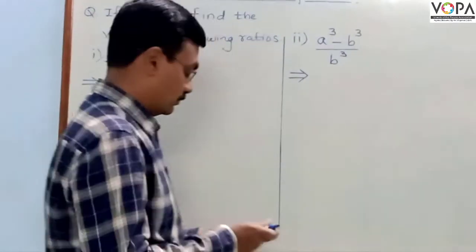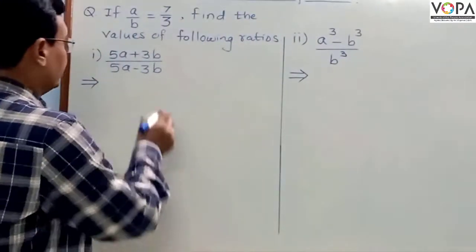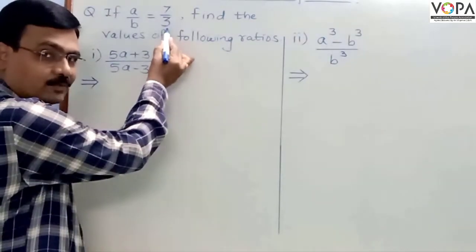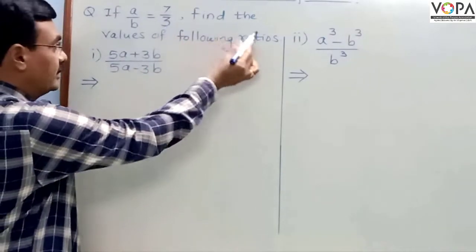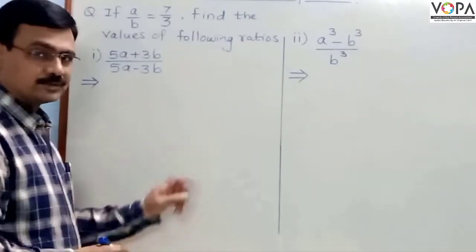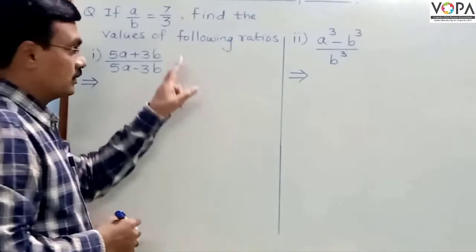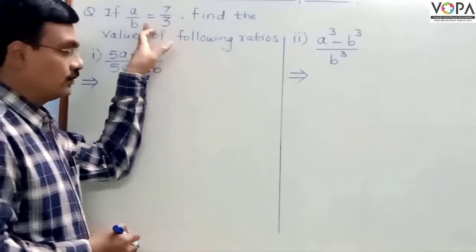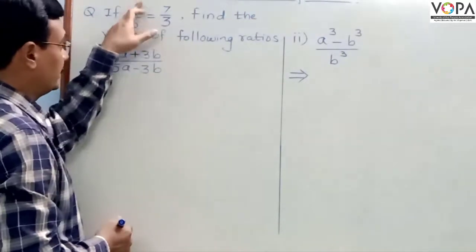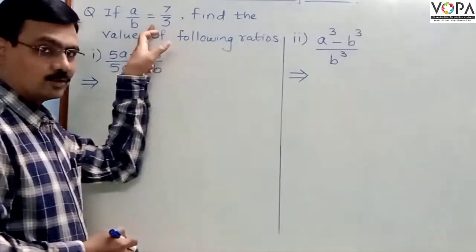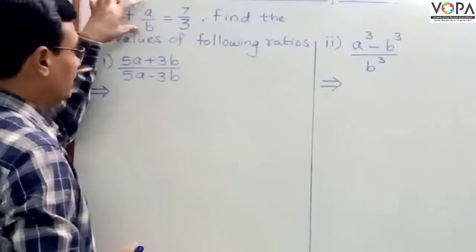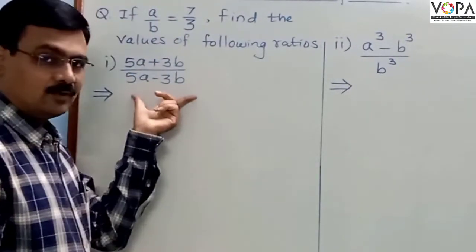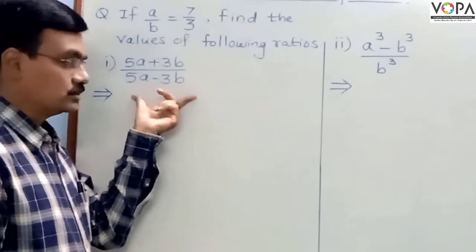Let us have one example. If A upon B equals 7 upon 3, find the values of the following ratios. The ratio given is A upon B equals 7 upon 3. With the help of that ratio, we have to find the value of the given ratios.